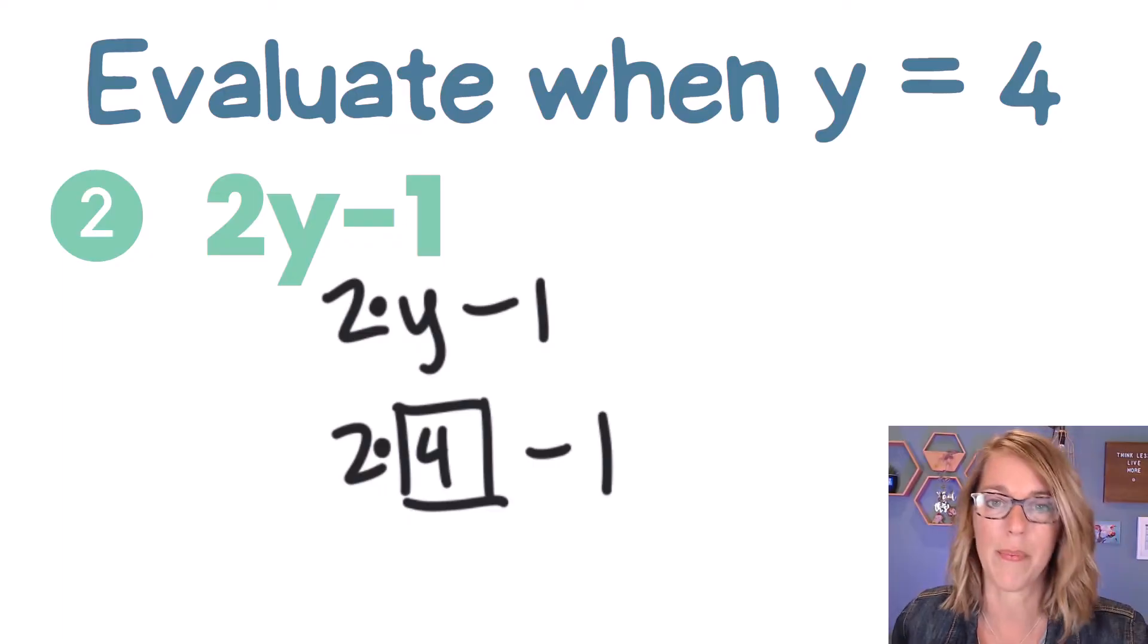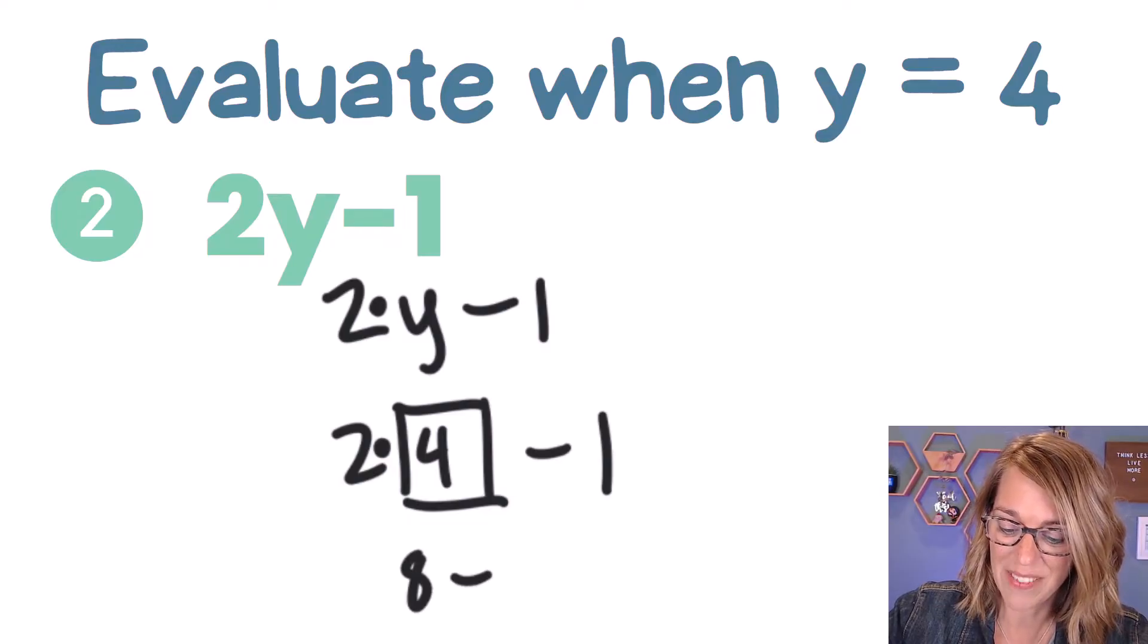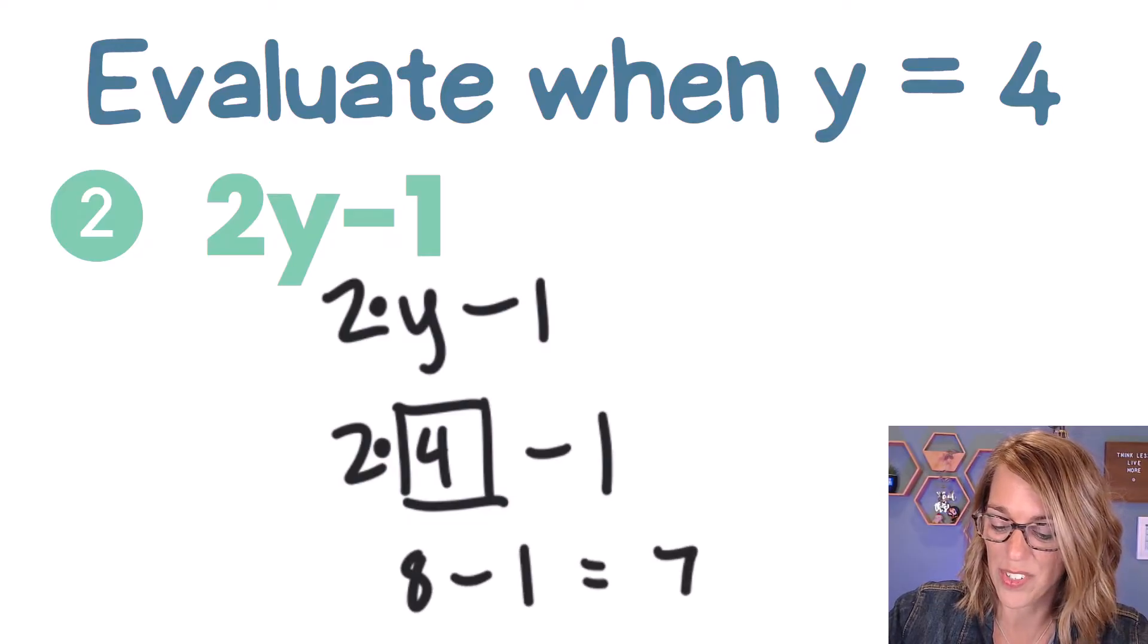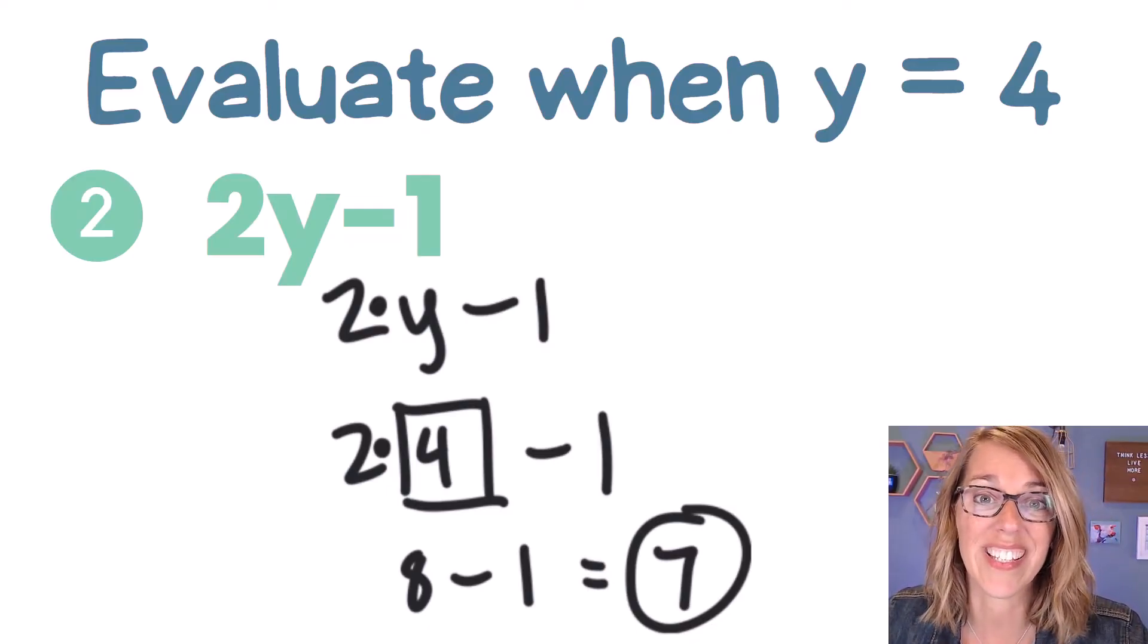Let me put my multiplication symbol back in there, and I'm going to do my multiplication first. 2 times 4 is 8, and 8 minus 1 is equal to our answer, the value of that expression, which is 7.